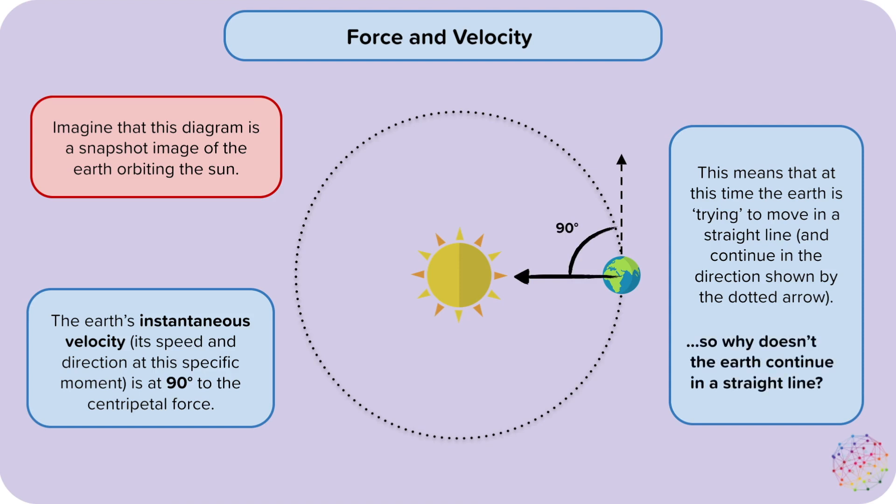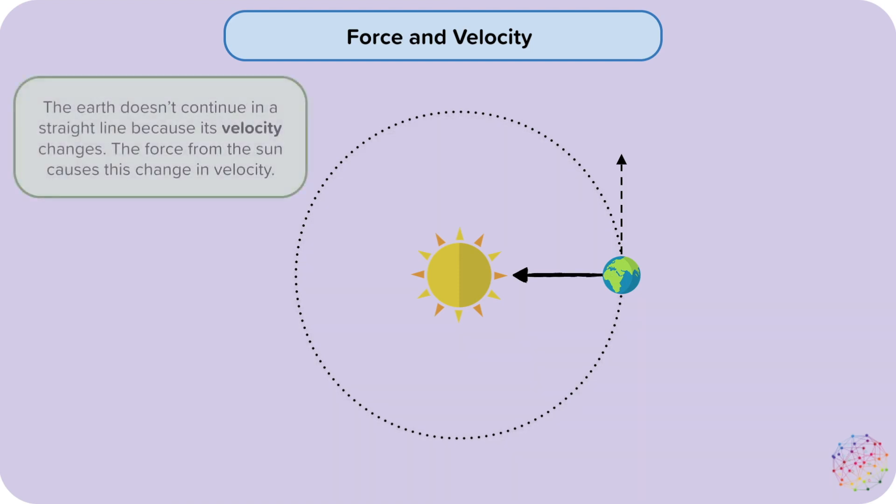So why doesn't the Earth continue in a straight line? The Earth doesn't continue in a straight line because its velocity changes. The force from the Sun causes this change in velocity.